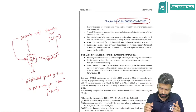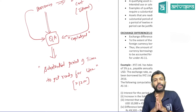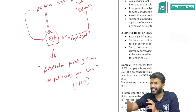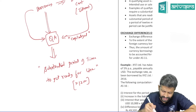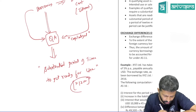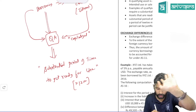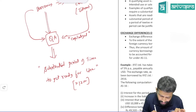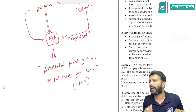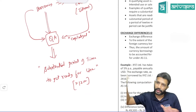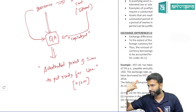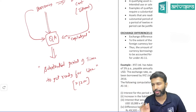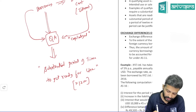So qualifying asset simply means that asset which takes substantial period of time to get ready for use, and ordinarily that substantial period of time is considered to be 12 months. This is not a hard rule — lesser than 12 months can also be justified. Ordinarily the accounting standard considers 12 months as the substantial period of time, but a lesser period can also be justified.